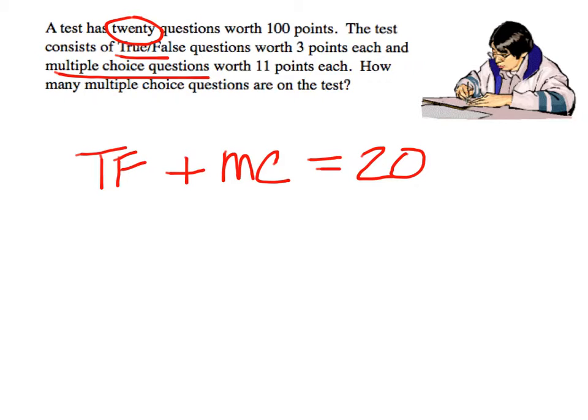True/false plus multiple choice equals 20. True/false questions are worth three points each, so if I had 3 times the number of true/false that I have, and then plus multiple choice times 11, that should give me 100 points.